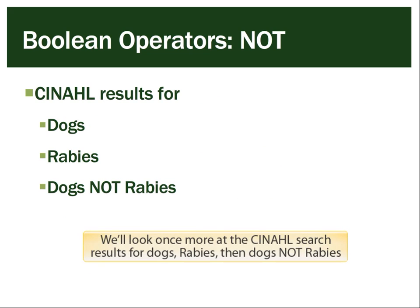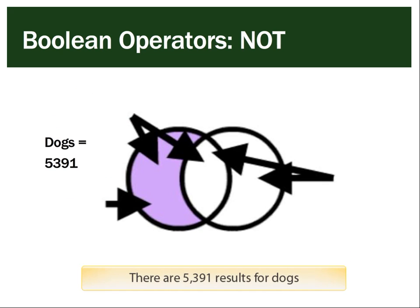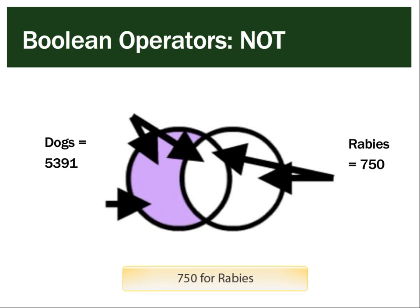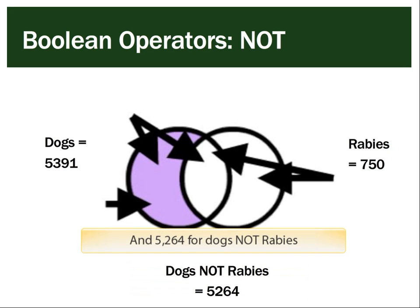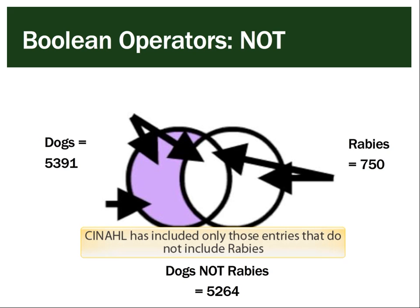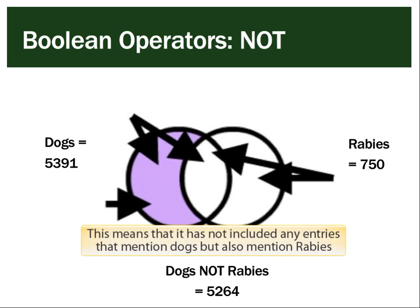We'll look once more at the CINAHL search results for dogs, rabies, then dogs NOT rabies. There are 5,391 results for dogs, 750 for rabies, and 5,264 for dogs NOT rabies. CINAHL has returned only those entries that do NOT include rabies, meaning it has not included any entries that mention dogs but also mention rabies.